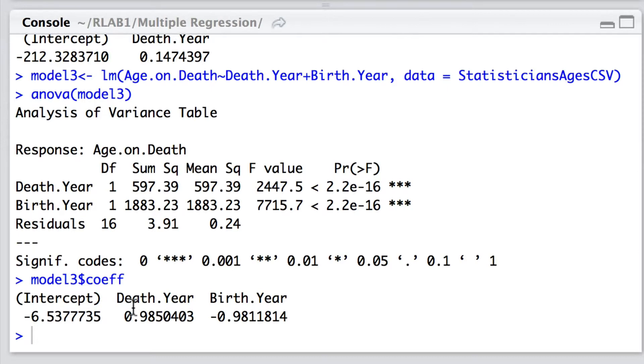So what we're seeing here is that very approximately the age to which the statisticians lived, and of course we're trying to make wider inferences about statisticians in general, we can simply take their death year and birth year and take the birth year from the death year and we will have approximately how long they lived. So we're getting something reassuringly intuitive from the fit of our model.